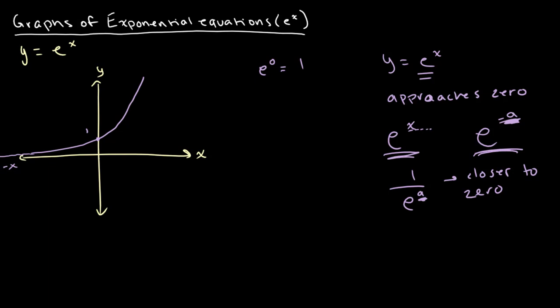Now on our right side, for increasing values of x, this goes on and on forever until an infinitely high value — it basically just goes on until infinity. That's because when we're taking e to the x, as our value for x becomes higher, the value of e to the x becomes higher. So that's about it for the graph of y is equal to e to the power of x.